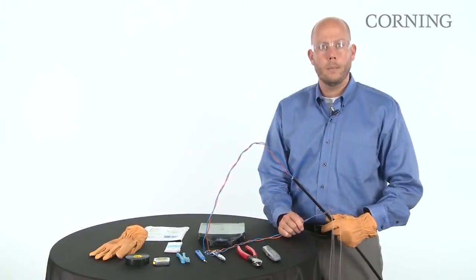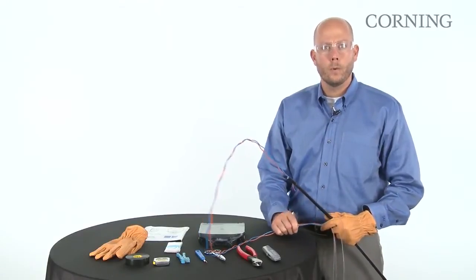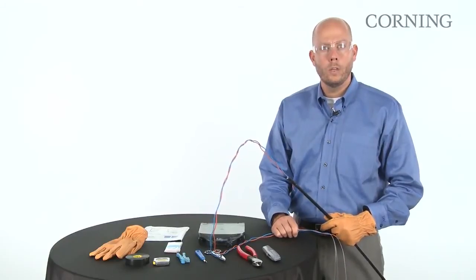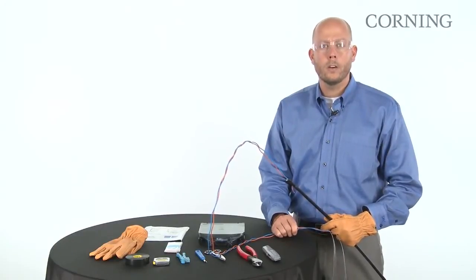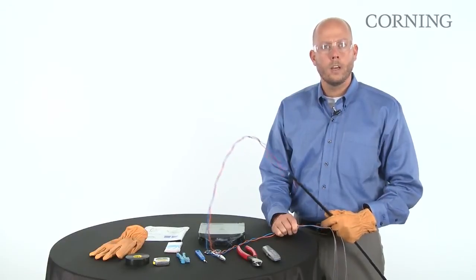When prepping incoming cable utilizing tight buffered or loose tube cable, the strip length for the CCH-01U, 2U, and 3U is 110 inches and the CCH-04U is 130 inches.